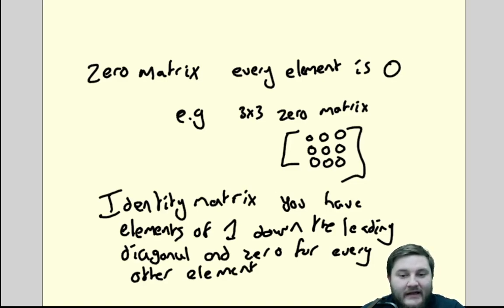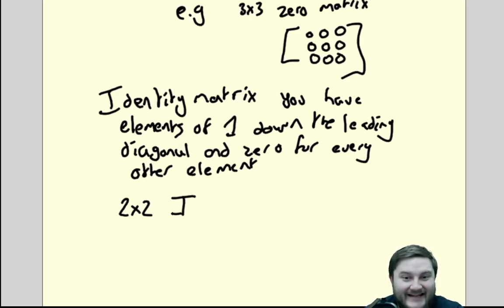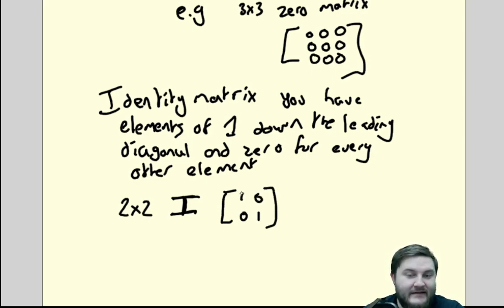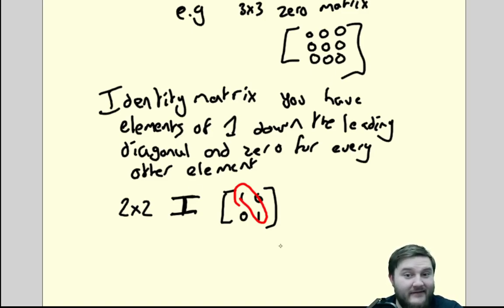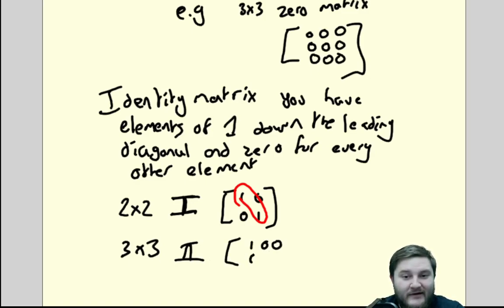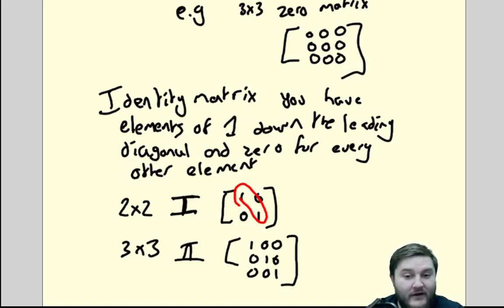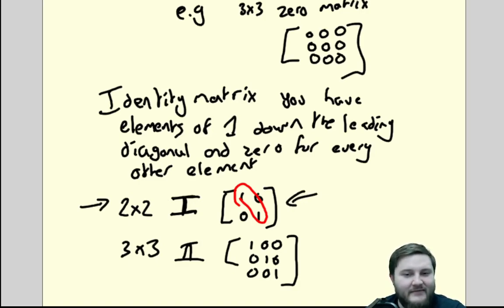So an identity matrix — the 2 by 2 identity matrix, which we usually denote with a bold capital I, looks like this: it's 1, 0, 0, 1. The leading diagonal goes across the matrix, and there are ones along the leading diagonal with zeros in every other position. For example, the 3 by 3 identity matrix is 1, 0, 0 / 0, 1, 0 / 0, 0, 1 — ones down the leading diagonal and zeros everywhere else. The 2 by 2 identity matrix is the one you need to know for GCSE Further Maths.